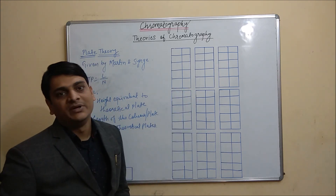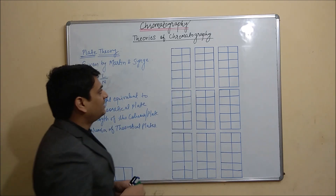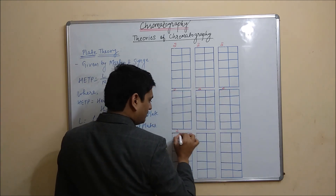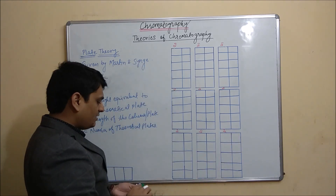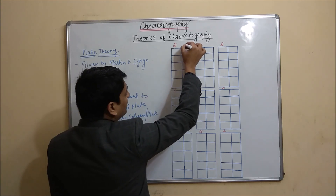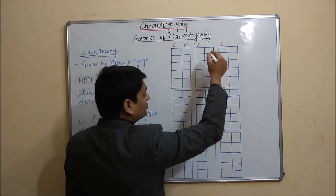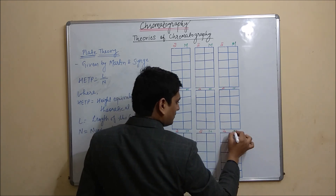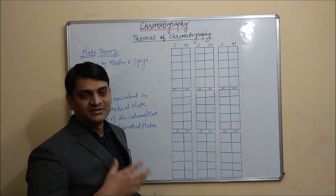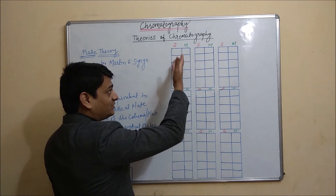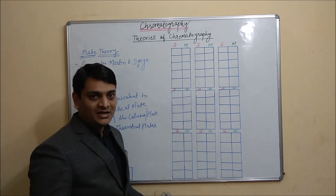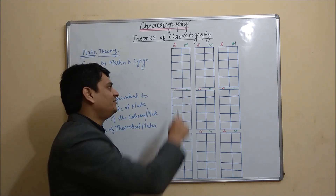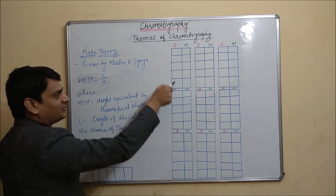Here I have taken a diagrammatic representation for plate theory. On the left side we are taking stationary phase — S represents stationary phase — and the right side part is for mobile phase — M represents mobile phase. This demonstration is only for understanding. In reality, mobile phase runs over the stationary phase. Here one column is divided into five theoretical plates.